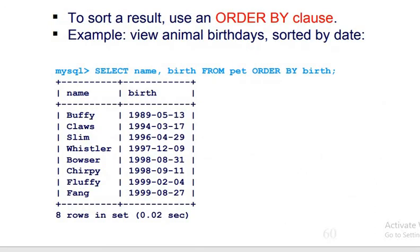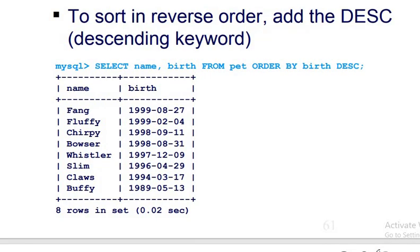We use ORDER BY clause to sort any particular result. SELECT name, birth FROM pet ORDER BY birth. Look at that birth, look at the output. We have DESC—descending order—the keyword DESC. If we don't use DESC, it is ascending order.